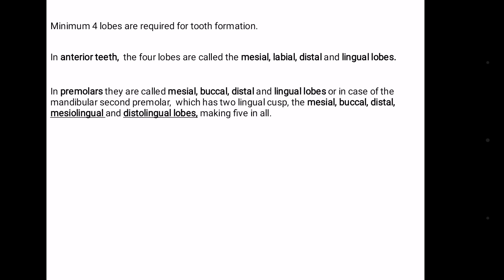In premolars, they are called mesial, buccal, distal, and lingual lobes. In the mandibular second premolar, there are 2 lingual cusps, giving it 2 more lobes — the mesolingual lobe and the distolingual lobe.